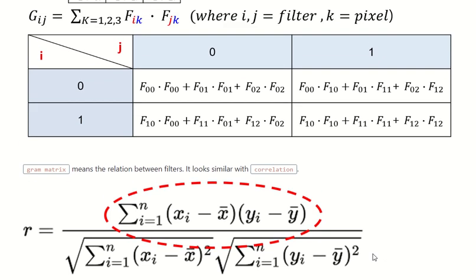The Gram matrix represents the relation between filters. You can guess that it looks similar to correlation, but in the Gram matrix you don't need to subtract the mean.